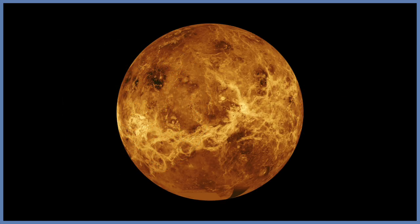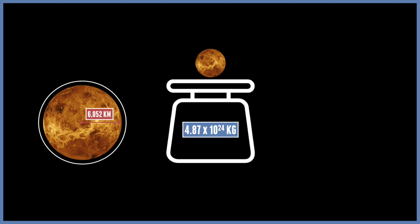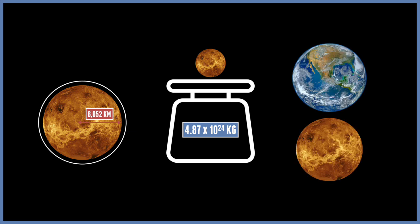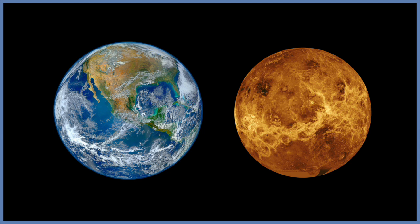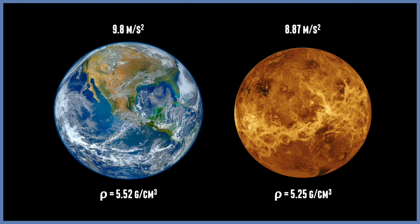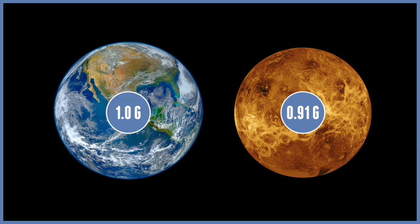Venus is a very similar planet to Earth, often known as Earth's twin. Venus has a radius of just over 6,000 kilometres and a mass of 4.87 times 10 to the 24 kilograms — pretty much the same size as Earth, but just a tiny bit smaller. It has around about the same density, but because of its slightly lower density, the gravity changes, coming out at 8.87 metres per second squared — just lower than Earth's at 0.91g.